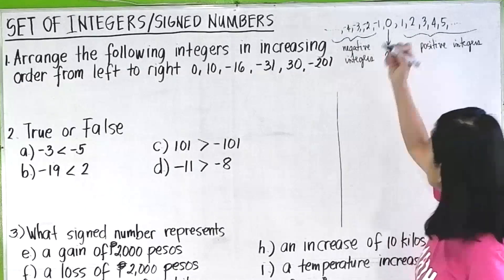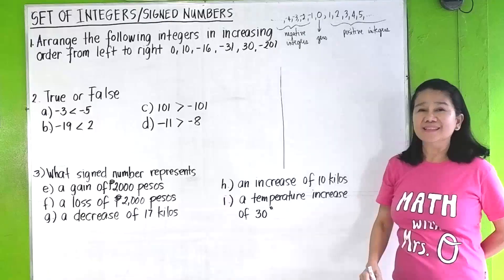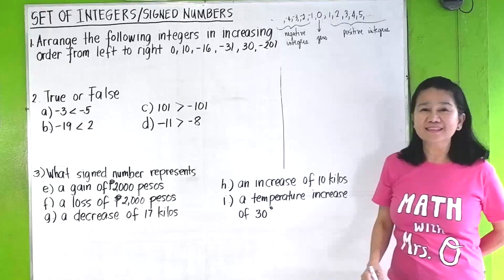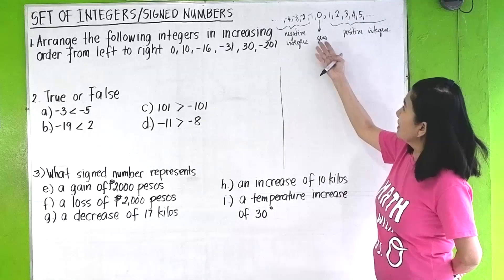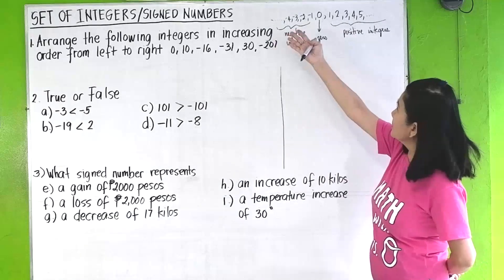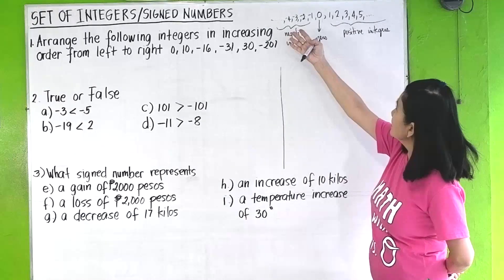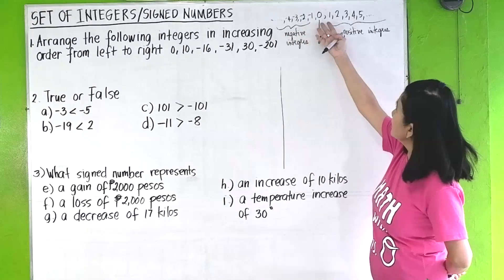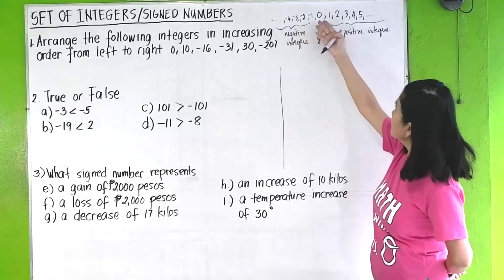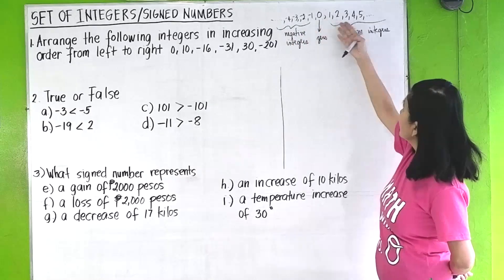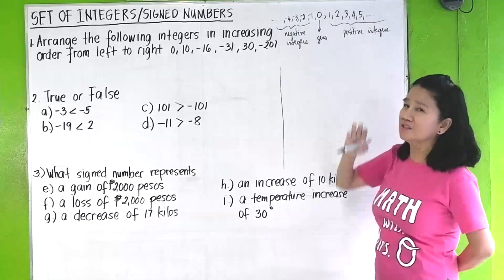Integers. So we have, again, the set of integers is equal to the negative integers, zero, and the positive integers.